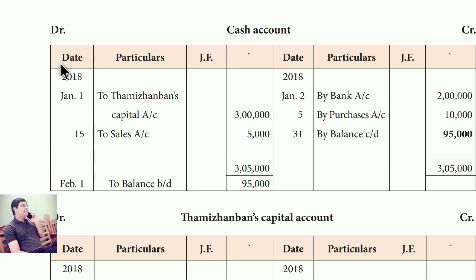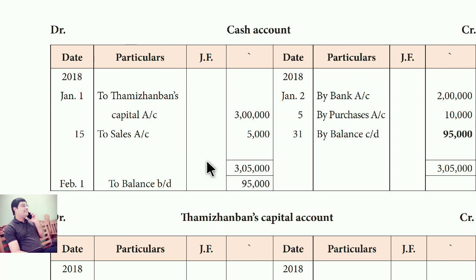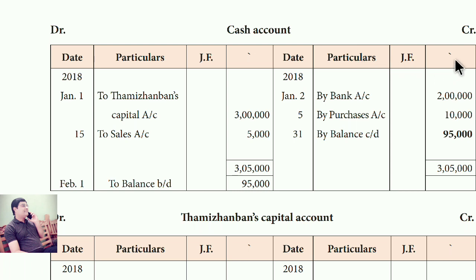On the left side write 'Debit' and on the right side write 'Credit'. The columns are: Date, Particulars, JF (journal folio), and Rupees/Amount. The same column structure — Date, Particulars, JF, Amount — appears on both the debit and credit sides.